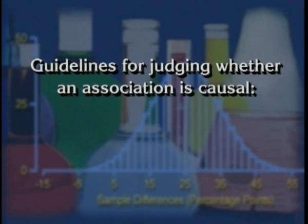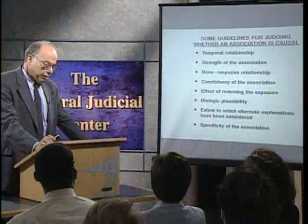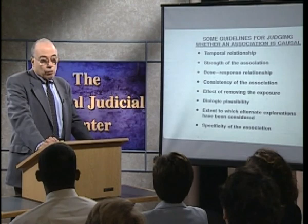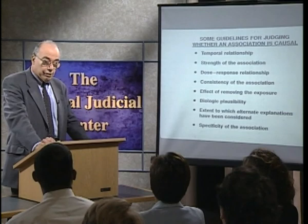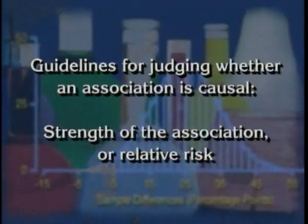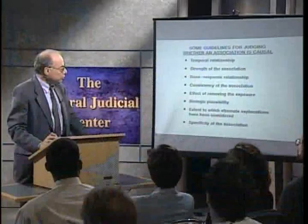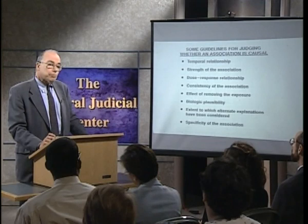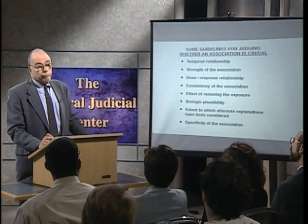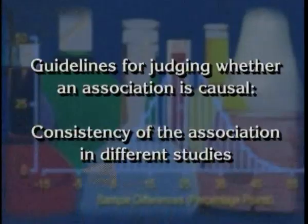Some of these criteria are shown on this slide. First, is there a temporal relationship between the exposure and the disease? If we believe that a certain exposure causes the disease, then the exposure should have occurred prior to the development of the disease. If the exposure occurred after the disease, clearly it is not consistent with a causal inference. Next is the strength of the association, also called the relative risk. Third is the dose-response relationship, which says that if an exposure is related to the development of disease, the greater your exposure, the greater your risk of disease should be.